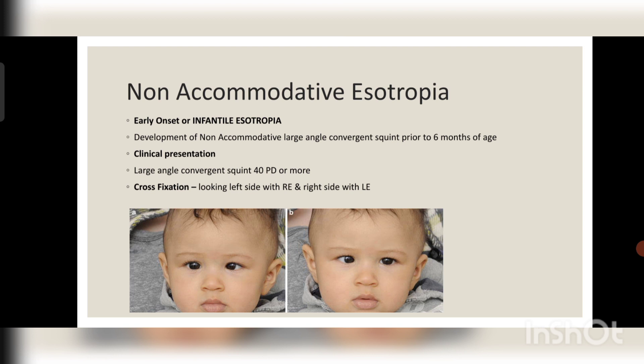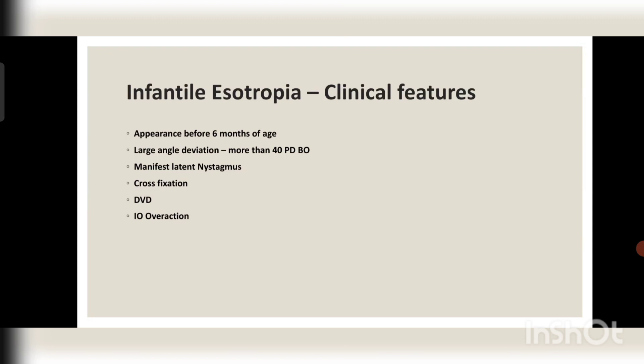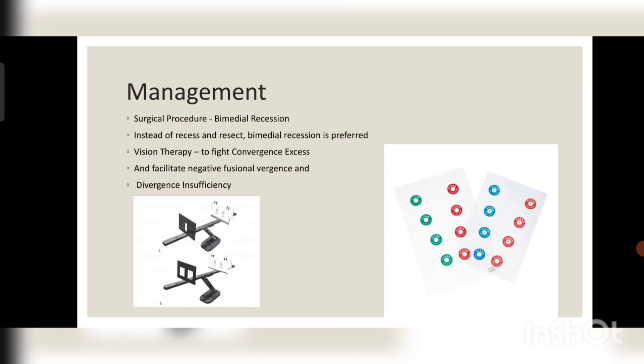Parents sometimes notice but sometimes ignore cross fixation, but it should be brought to attention at the earliest. The clinical features of infantile esotropia include: onset from birth (zero to six months), larger deviation of 40 prism diopters base out, manifest latent nystagmus, cross fixation, and possible presence of DVD — dissociated vertical deviation. DVD means one eye has a vertical deviation along with the horizontal deviation, dissociated because the vertical deviation is only in one eye. There is also inferior oblique overaction.